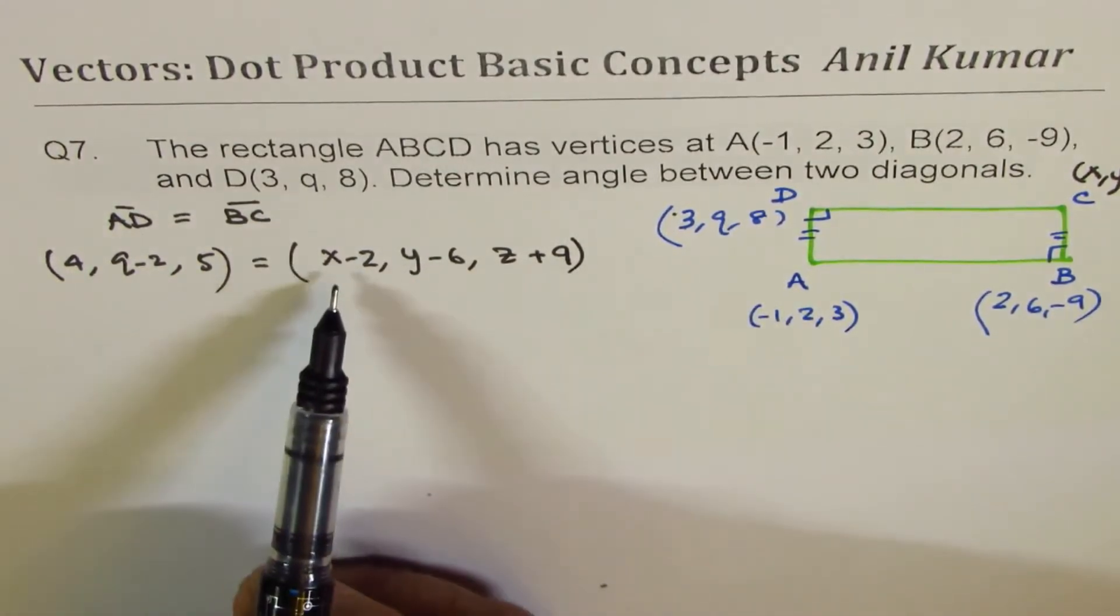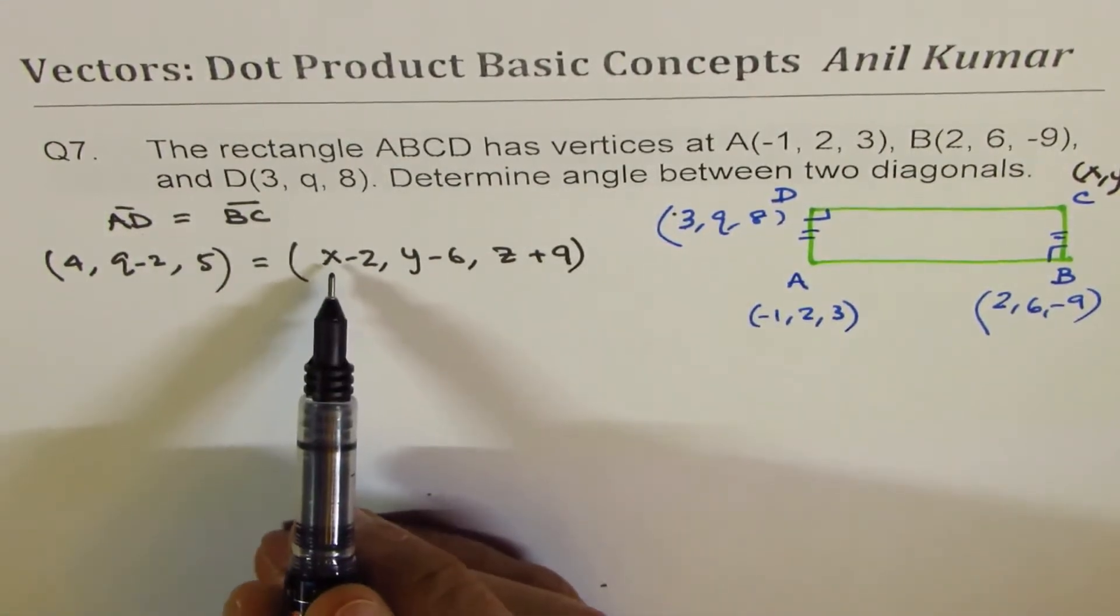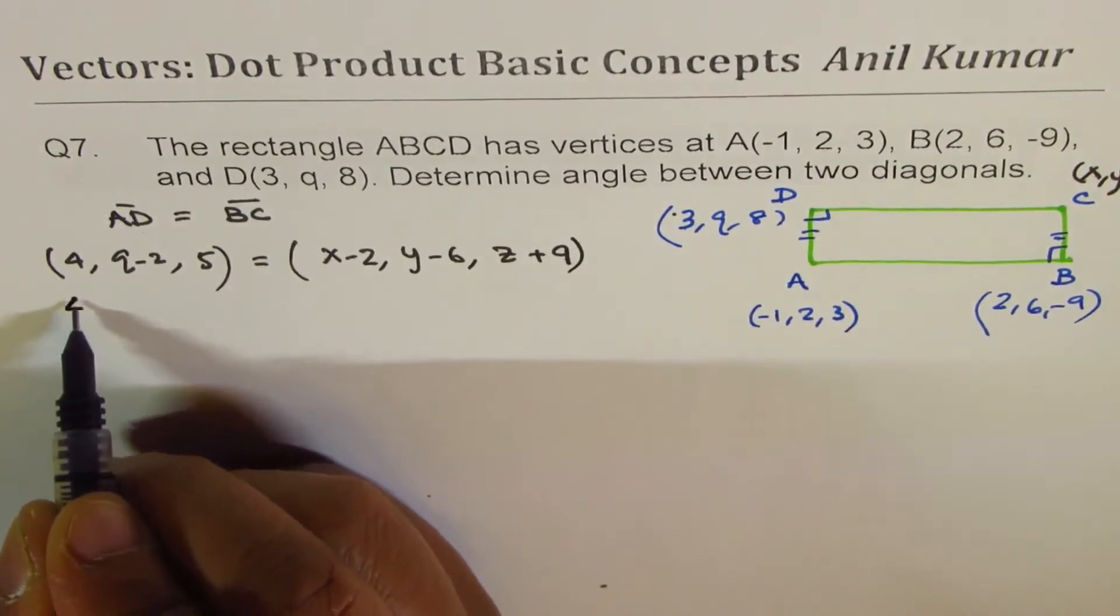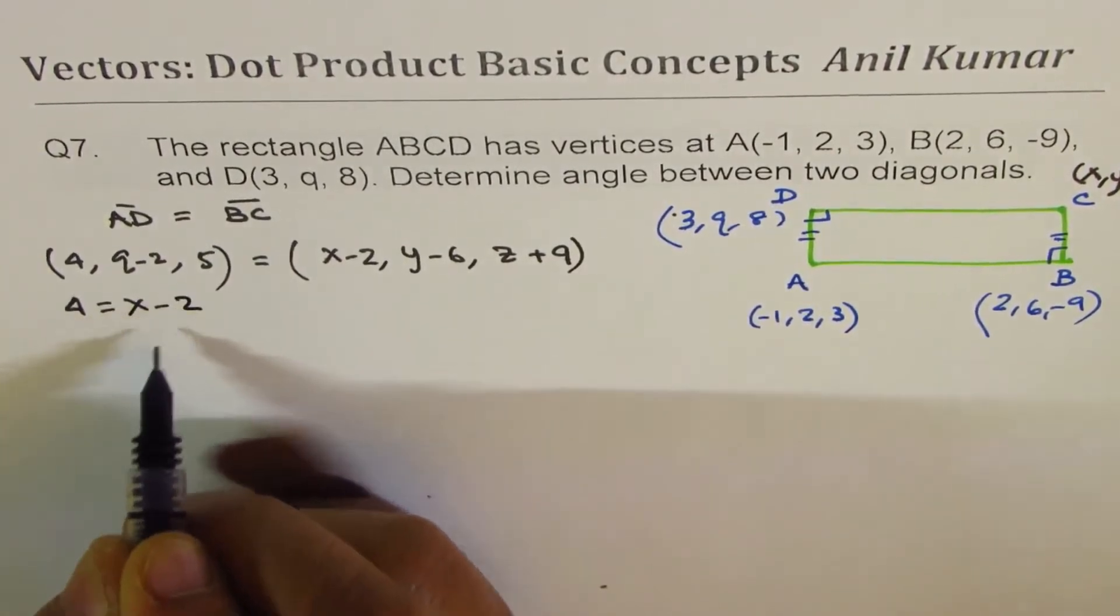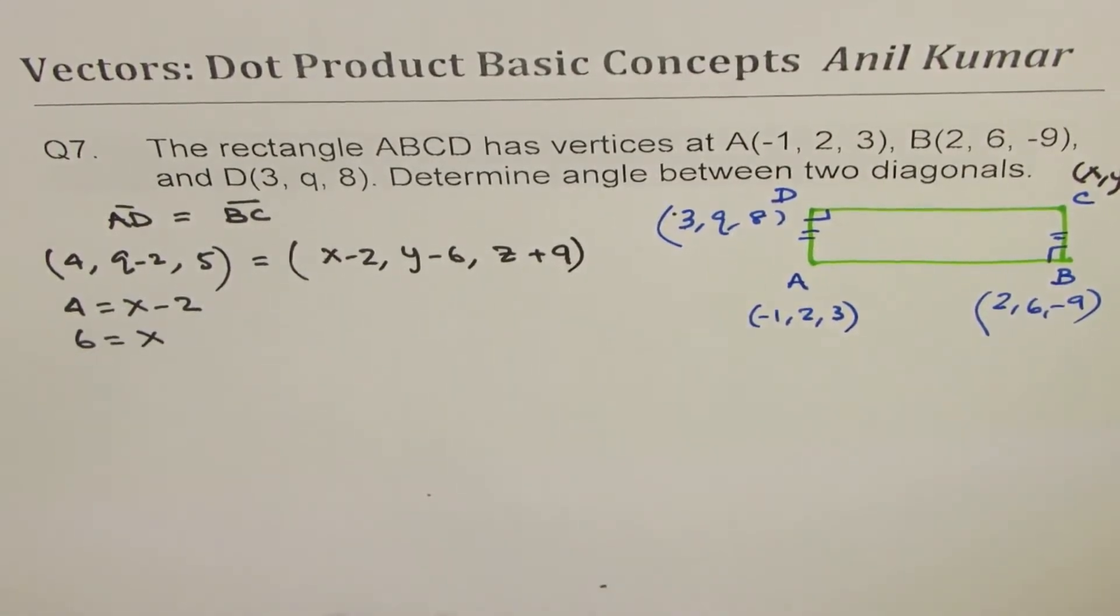we get three different equations, and so we can find X, Y, and Z. The first one is X-2 = 4, which gives us X = 6. So we get the X value.